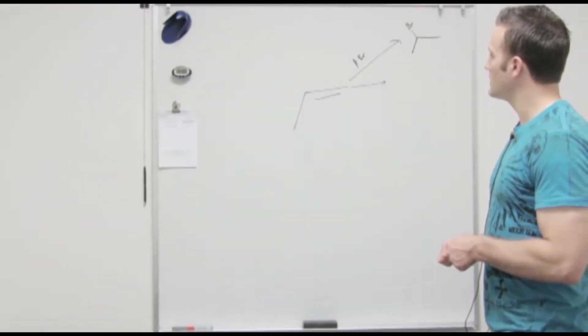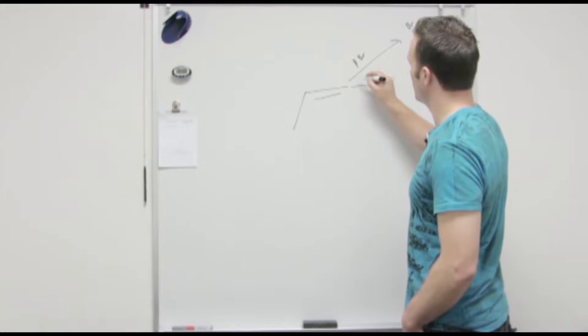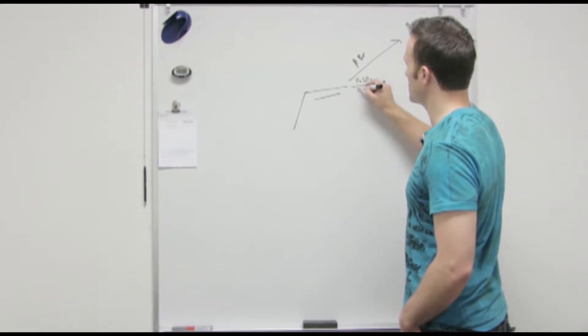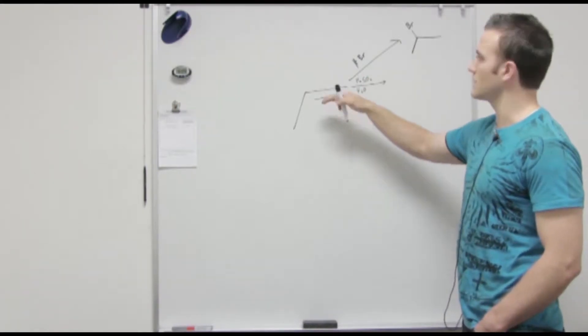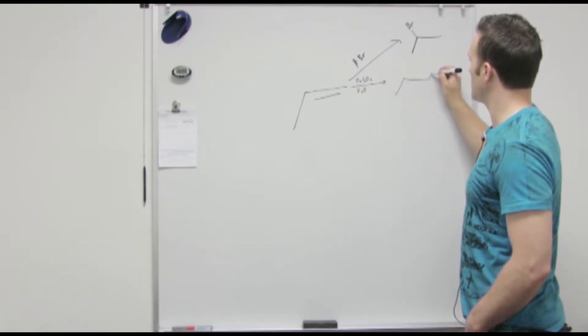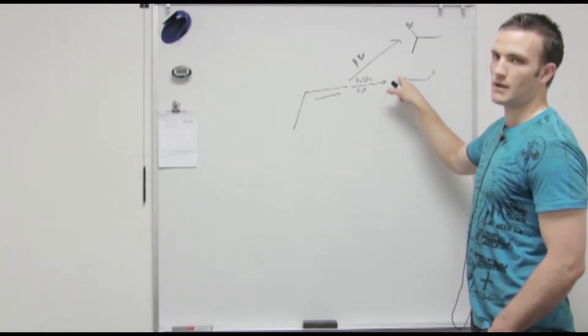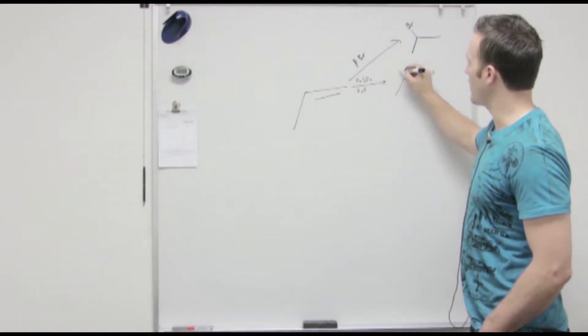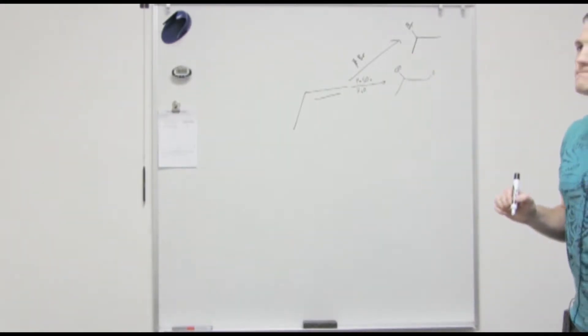Okay, so if we were to add dilute H2SO4 and water, then the proton from the strong acid could be grabbed by this double bond, so it would be here. And then water could come in and attach to this carbon and then be deprotonated by the conjugate base of sulfuric acid. So then you'd be left with an alcohol or a hydroxyl group right there. Does that make sense?